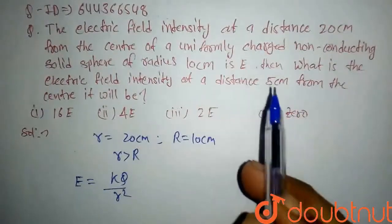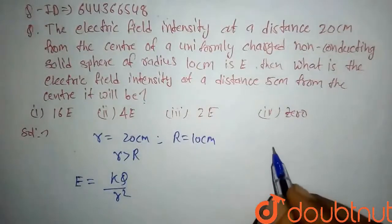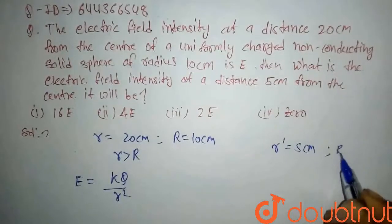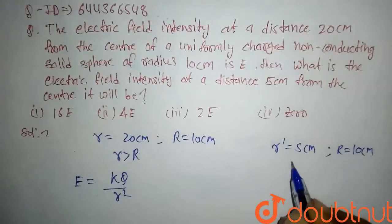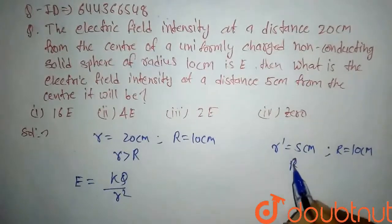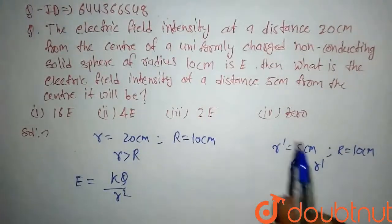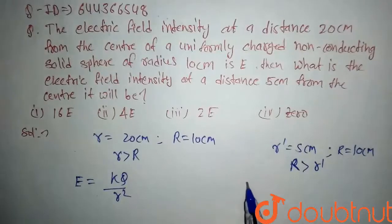For here, we have to calculate electric field intensity at a distance from the center 5 centimeters. So let's say this is r dash which is 5 centimeter. Also we note the radius of sphere is 10 centimeter, so we can say capital R is greater than r dash.